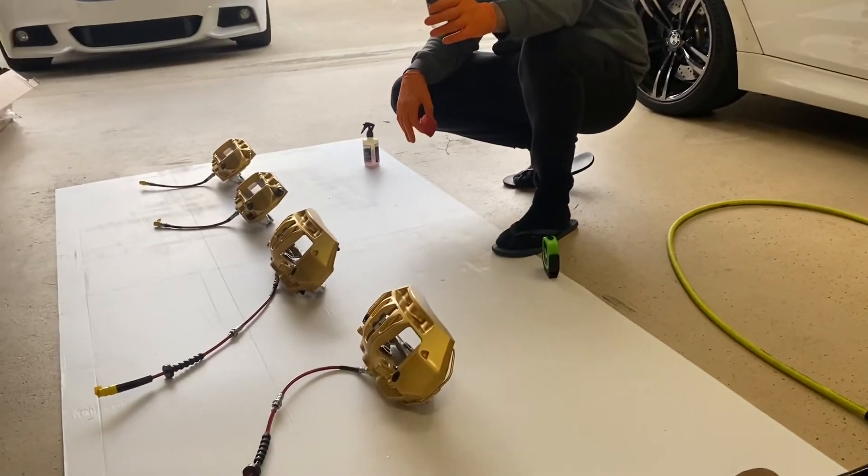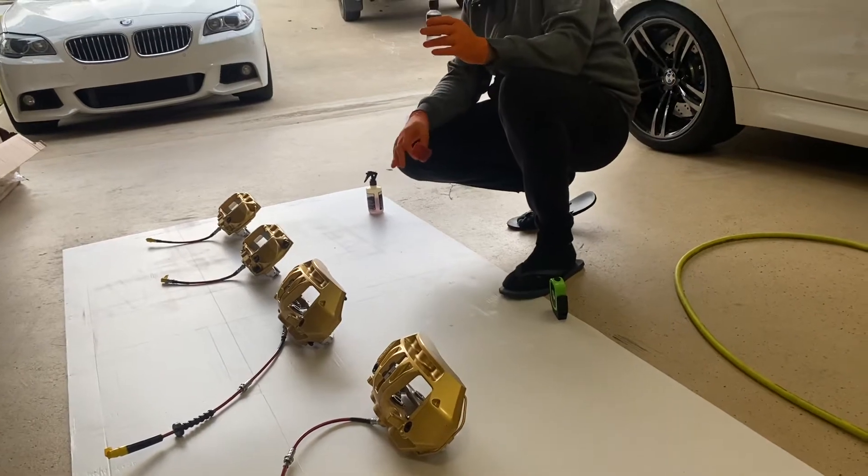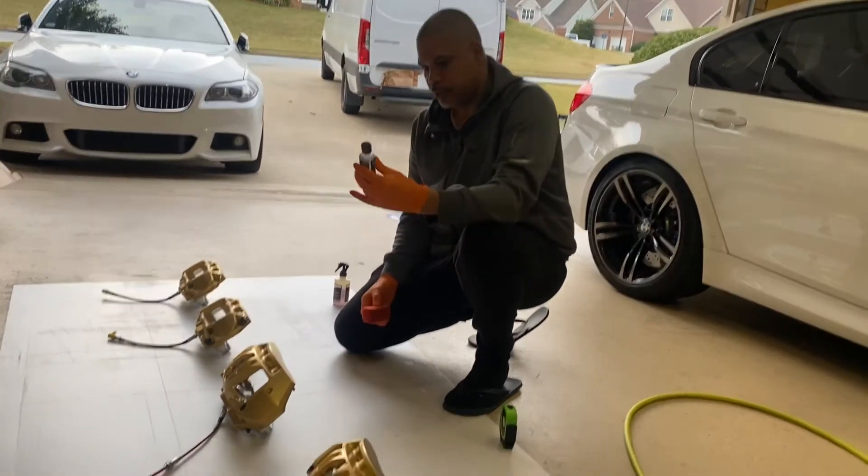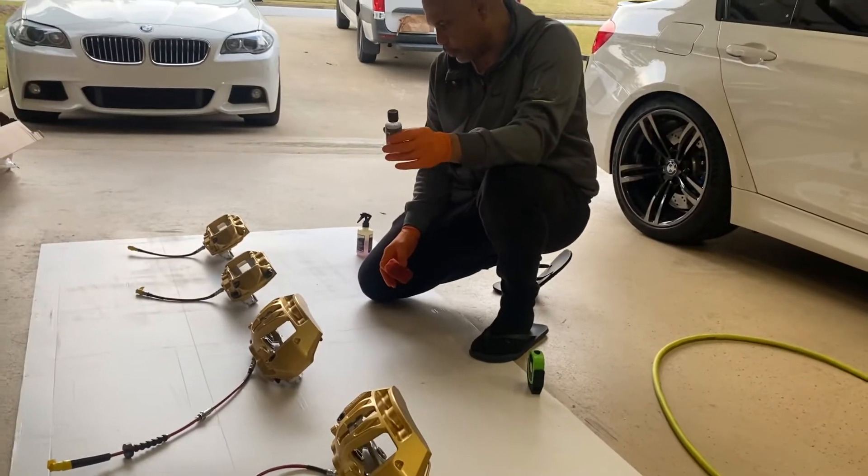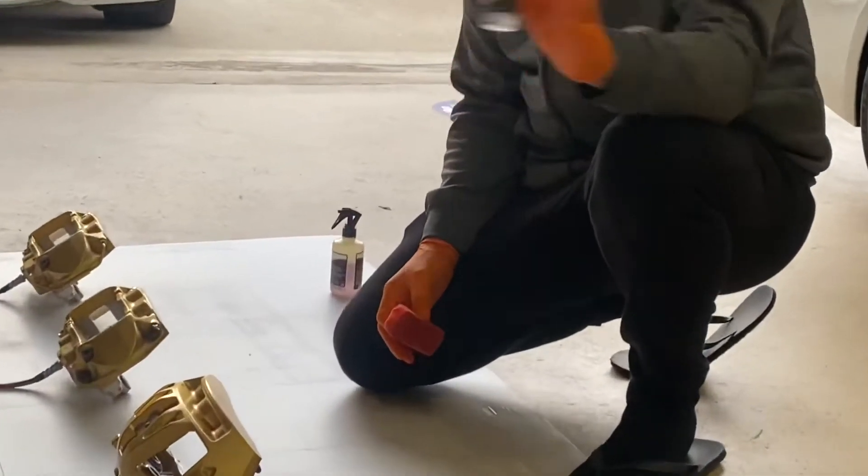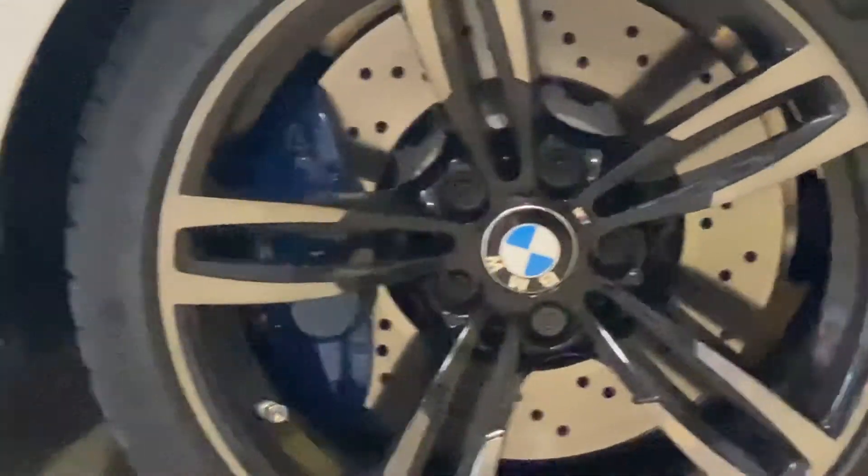These are ceramic calipers for the carbon ceramic brake system from BMW. So I'm putting some coating on here and I have a video coming up soon how to install these on this car here. It's going to look really nice. I don't know if the brake is going to be better but I know it's going to look better.